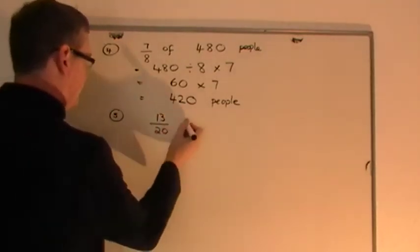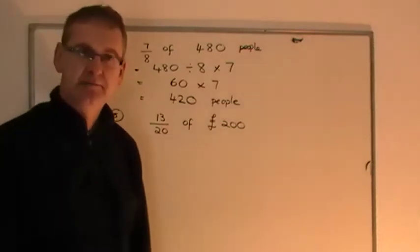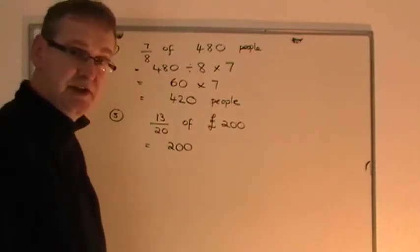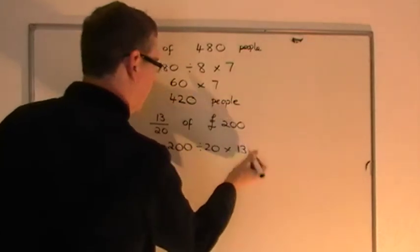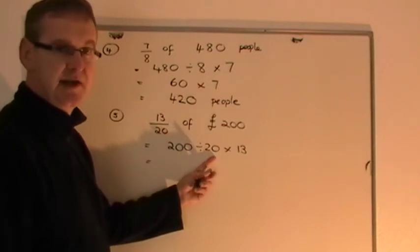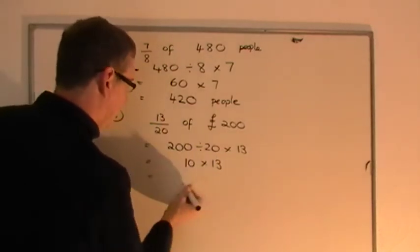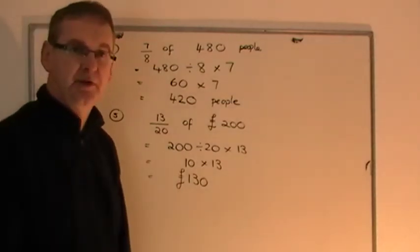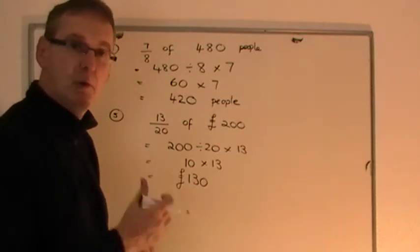One more — number five. What about thirteen-twentieths of two hundred pounds? All you do is take the two hundred pounds, share by twenty to get one-twentieth, then times by thirteen. Two hundred share by twenty goes ten times — ten twenties are two hundred. So that's ten. Then ten times thirteen gives you a hundred and thirty pounds. So thirteen-twentieths of two hundred pounds is a hundred and thirty pounds. That process is very straightforward. You may need it for paper one or paper two, so you need to be able to do it with and without a calculator. That's the end of this video.